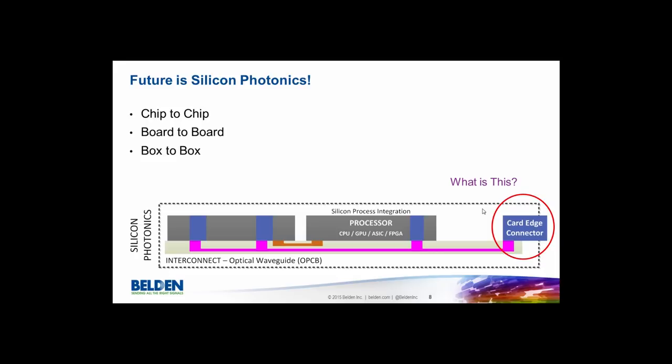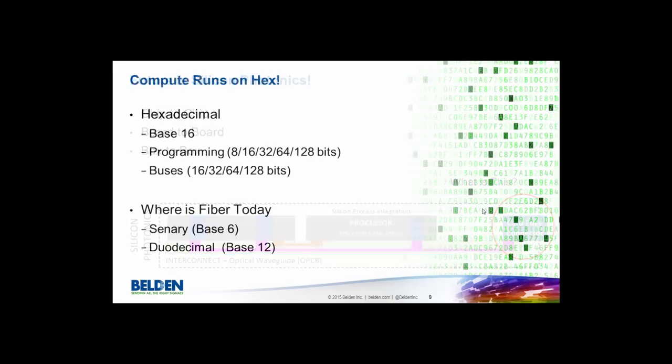We can extend high-speed buses and start to break down some of those serial limitations we've been living with. I've circled something on the far right side — a cartridge connector. Now that we need to pick optics off a PCB, our connectivity is going to change pretty significantly, and that's going to be a big challenge moving forward in terms of what our future connectors need to look like.